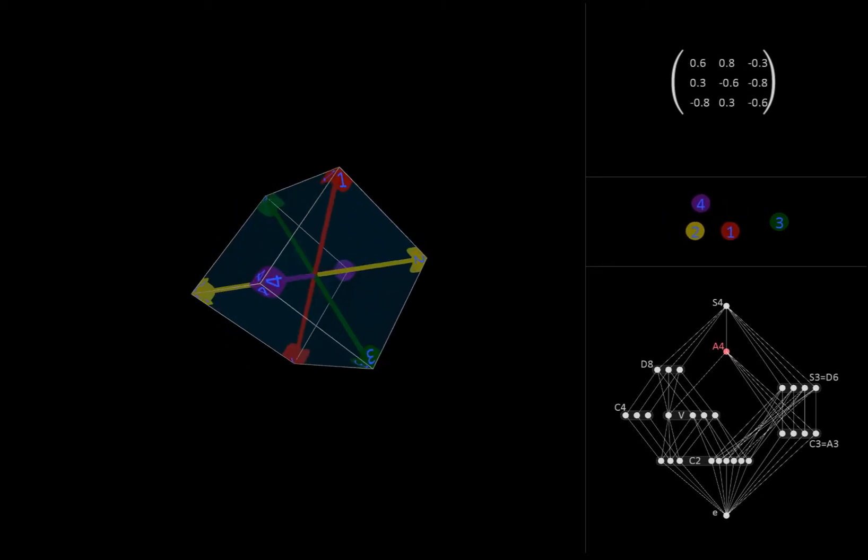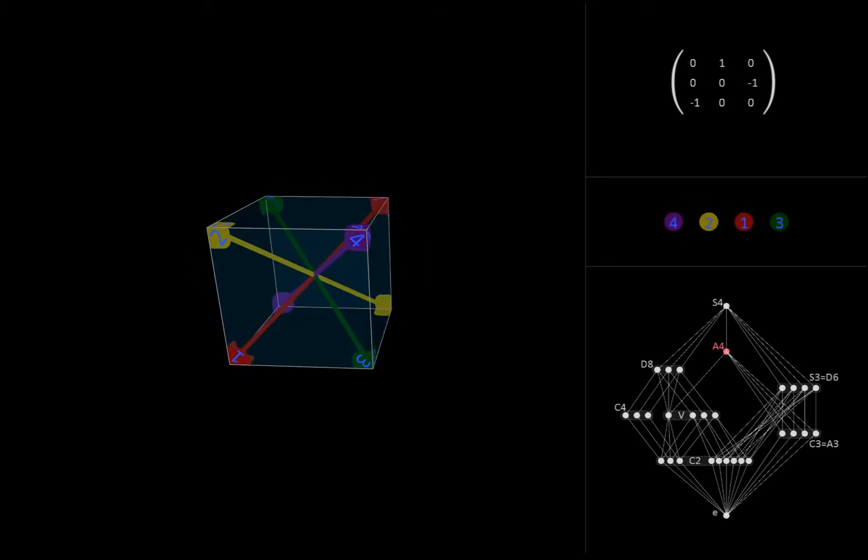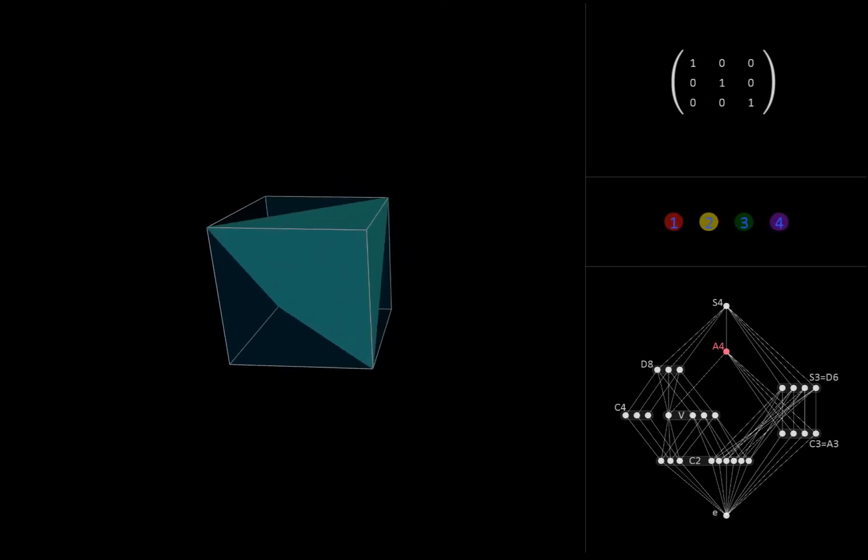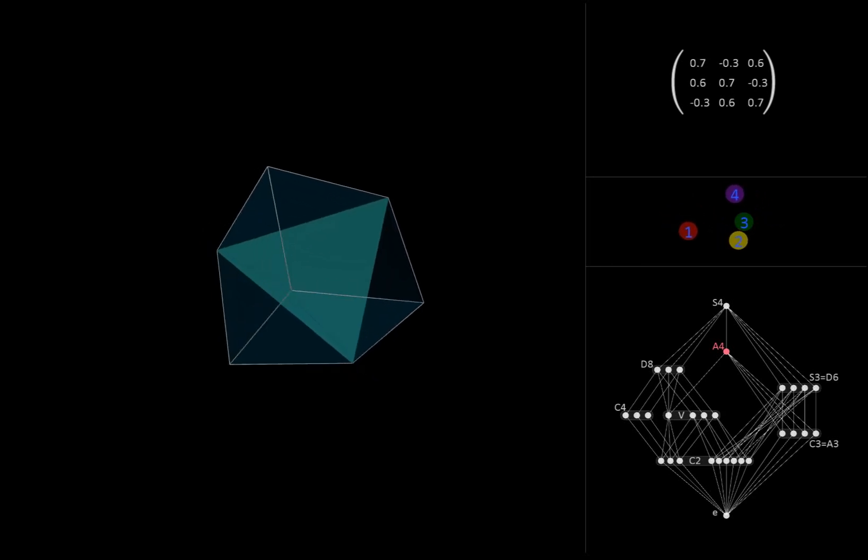Or combinatorially, three cycle permutations on a set of four objects. There is also another way to interpret this group geometrically. As we saw in another video, the group of symmetries of the tetrahedron is isomorphic to A4. We can inscribe a tetrahedron inside our cube like this. The 12 symmetries of the cube belonging to A4 are simply those that map the tetrahedron back to itself, such as these ones.